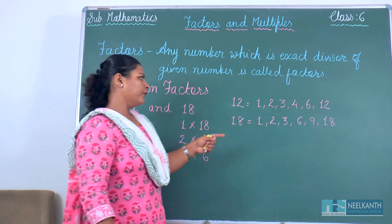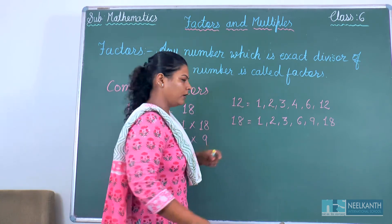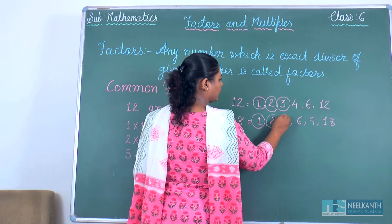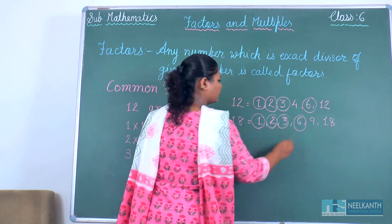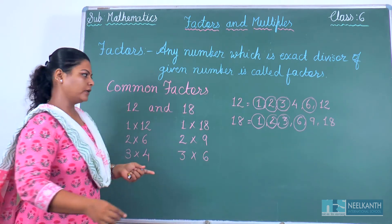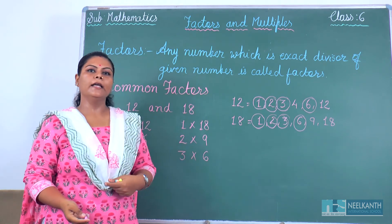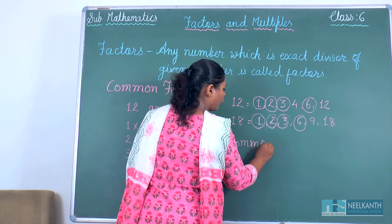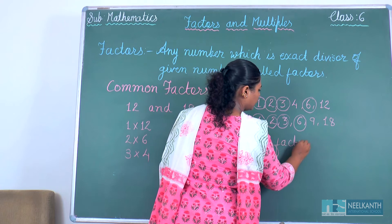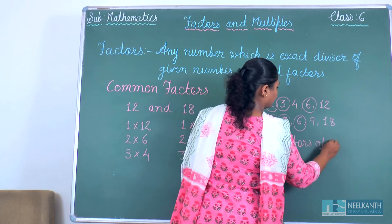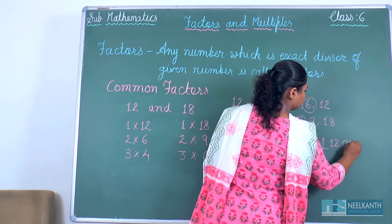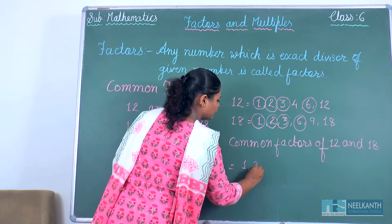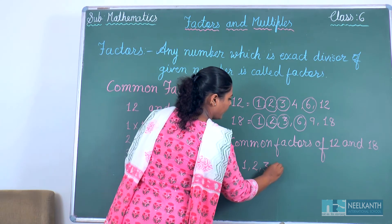Now we have to check which factors are the same in both numbers. Here 1, 1 — 2, 2 — 3, 3 — 6, 6. These 4 numbers are the same in both factor lists, so they are called common factors of 12 and 18. Common factors of 12 and 18 = 1, 2, 3 and 6.